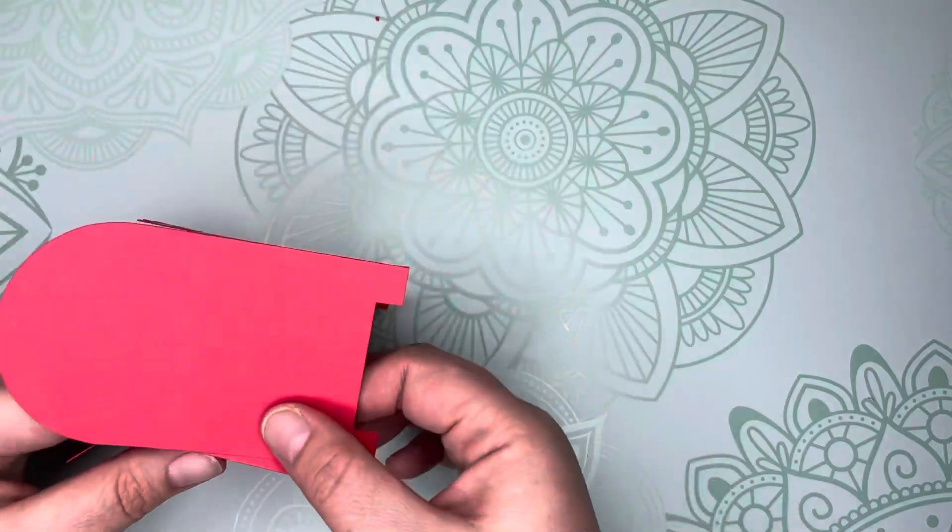To decorate the front of the mailbox, layer and glue the 'with love' sentiment with the white on top, the pink layer in the middle, and the black layer on the back. Glue the black square to the pink square, but make sure your edges match and are aligned.